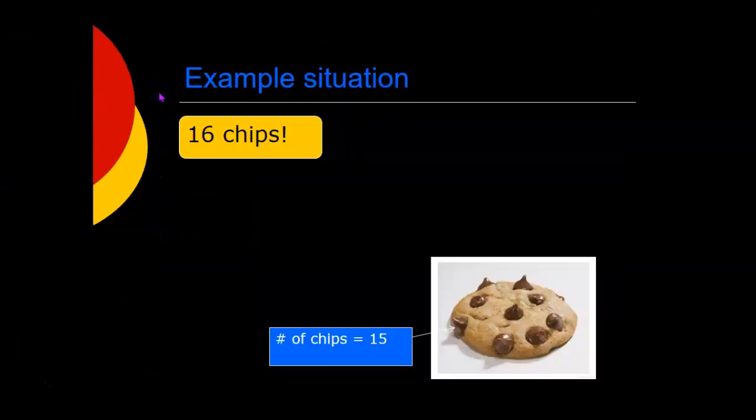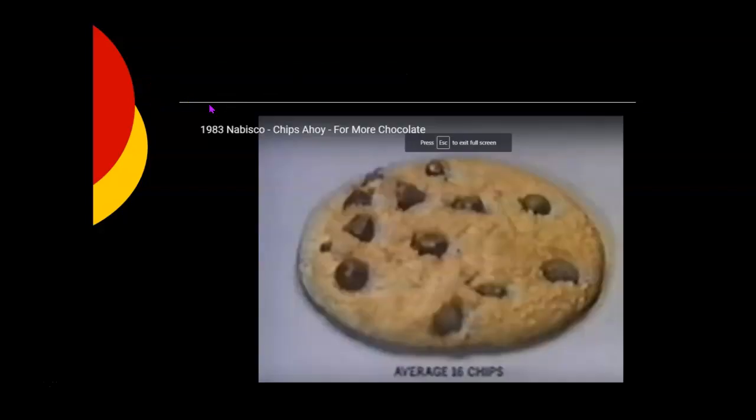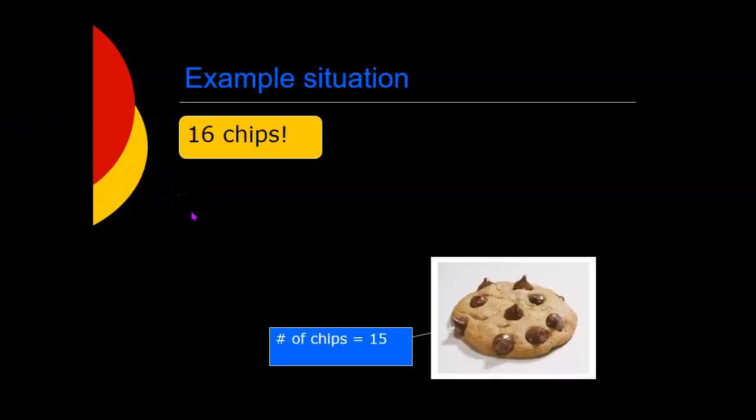So I remember when I was a kid, the Chips Ahoy brand chocolate chip cookies used to advertise that they had an average of 16 chocolate chips in their cookies. That was their slogan, 16 chips in Chips Ahoy. So suppose there is a cookie that advertises 16 chips per cookie, and you get one of their cookies. And you actually count how many chocolate chips, and it turns out that in the cookie you have, there are 15 chocolate chips.